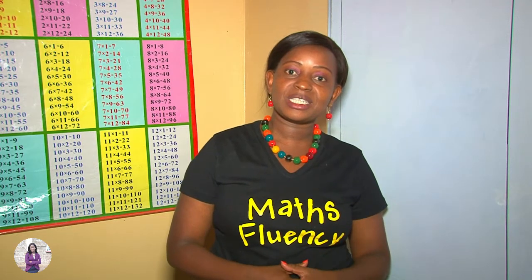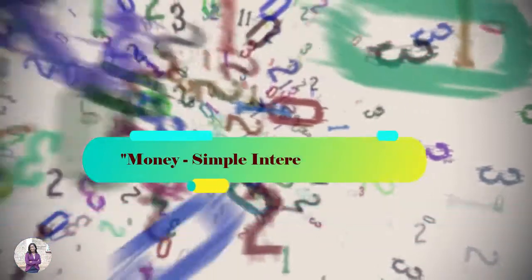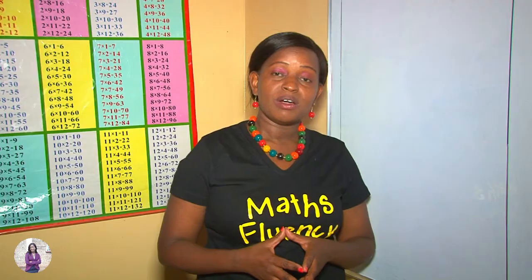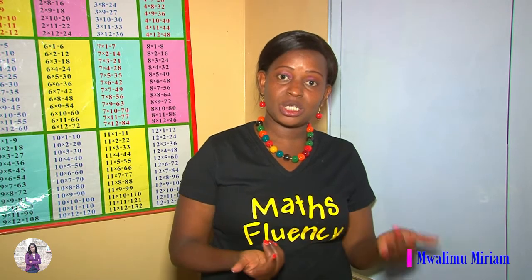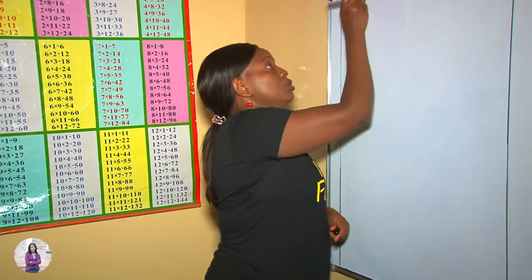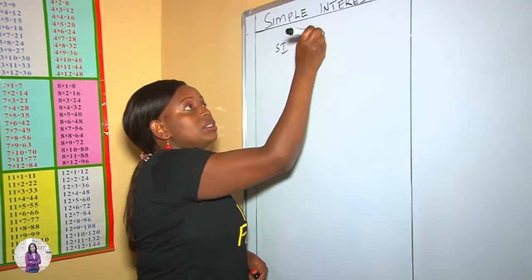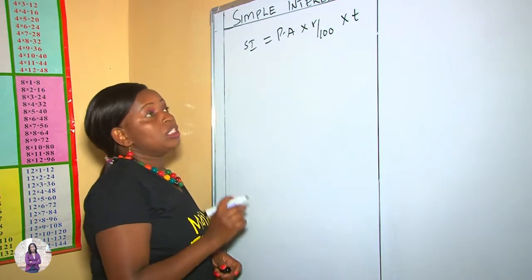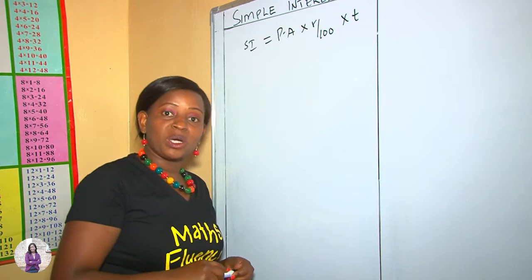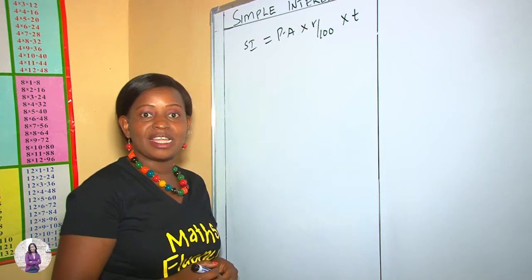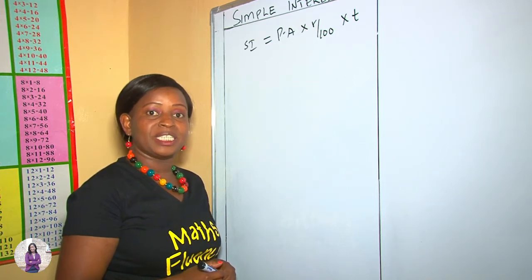Welcome to my YouTube channel. Today's lesson is about money and the subject is simple interest. In our previous lesson we derived the formula for simple interest. We said that simple interest is the profit the money generates or attracts after a given period of time, and that simple interest equals principal amount times rate over 100 times time. Today we will encounter questions that require us to apply the formula to get an unknown.